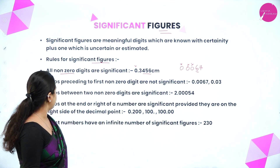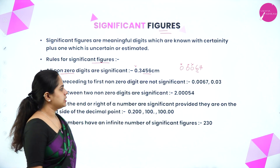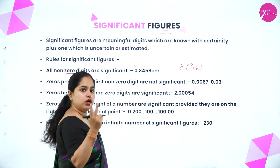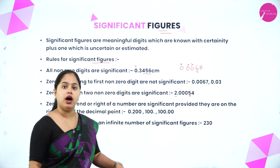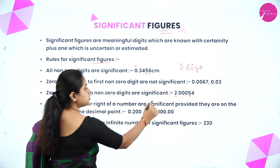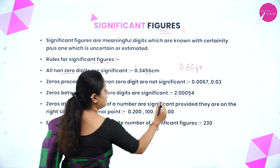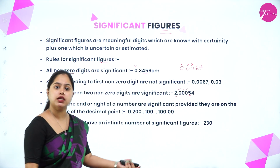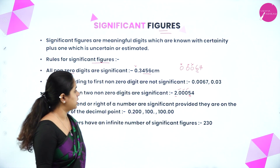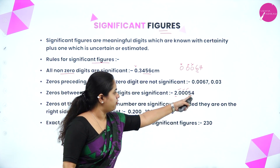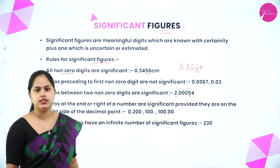Rule 3: Zeros between two non-zero digits are significant. For example, in a number like 200005, the non-zero digits are 2 and 5. The zeros between them are significant. In total there are 6 significant figures: 1, 2, 3, 4, 5, and 6.